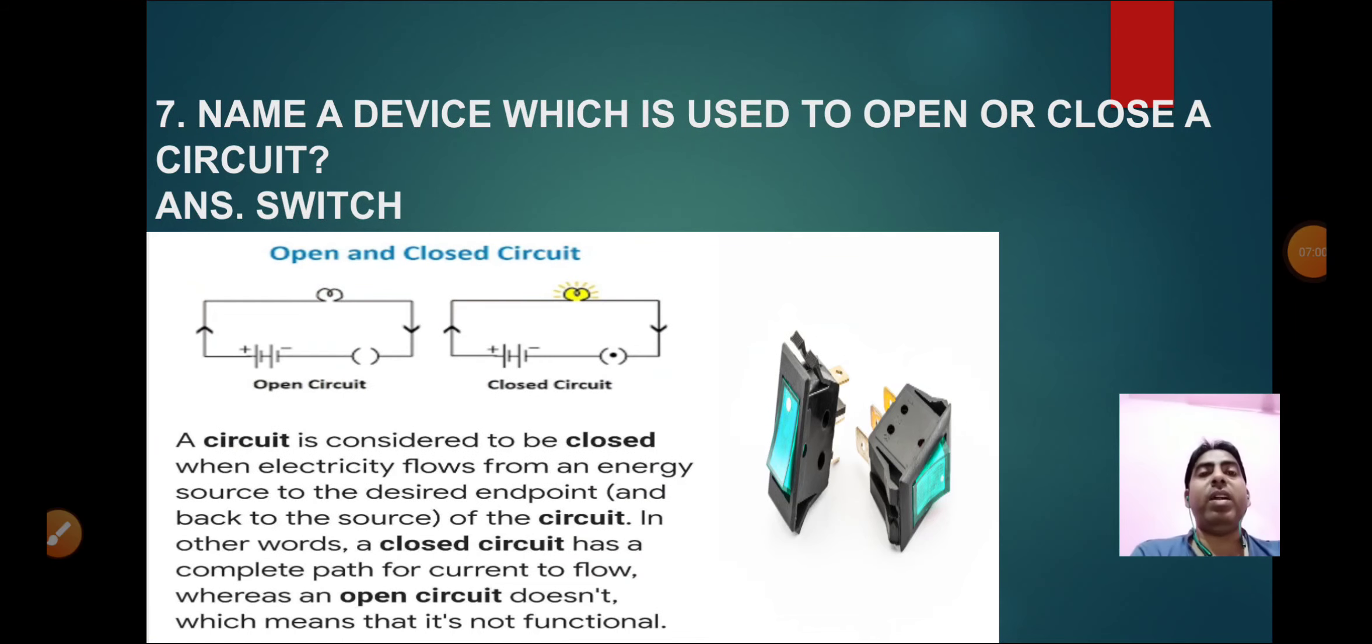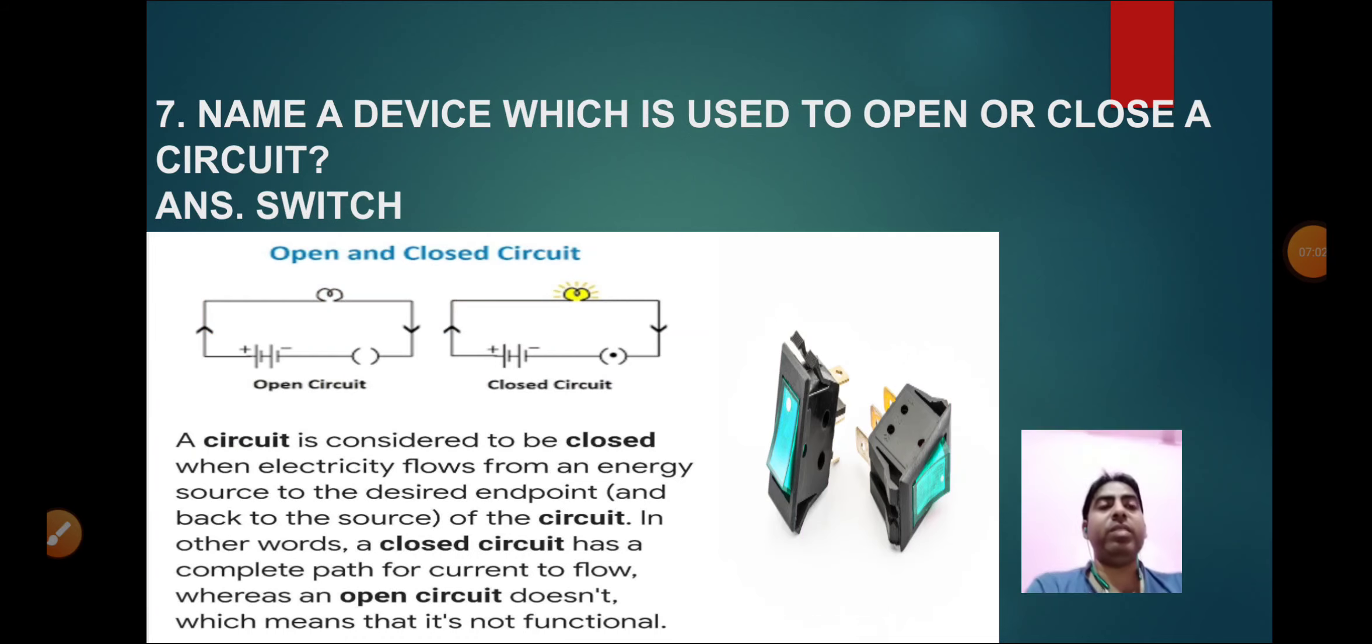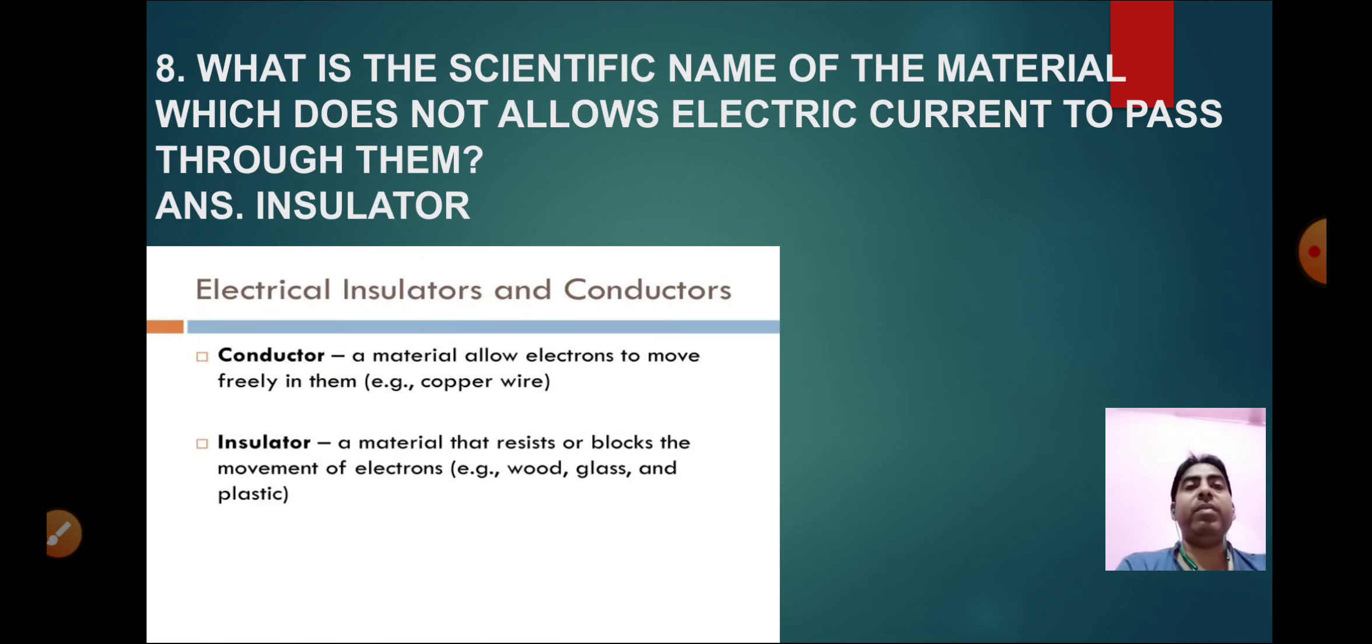Moving towards the next question, that is eight. The question is: What is the scientific name of the material which does not allow electric current to pass through them? That is insulators. Insulators are the material that resist or block the movement of electrons. They do not allow the current to pass through them.